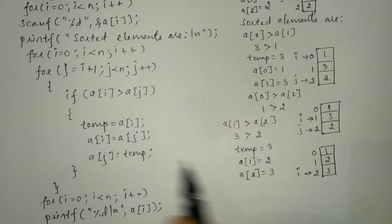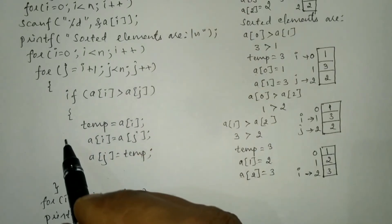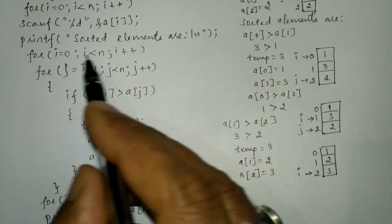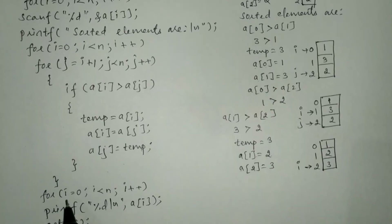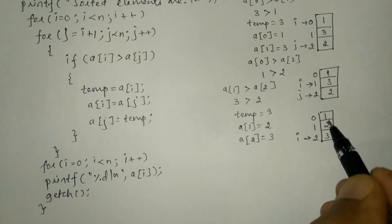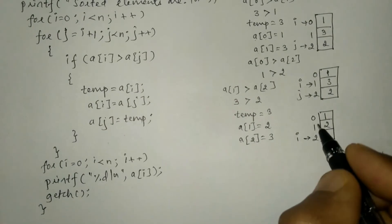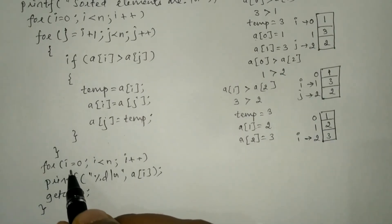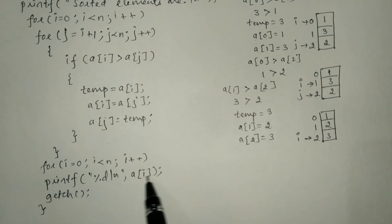i equals one, j increments to three — three is not less than three, so the inner loop exits. The outer loop increments i to two, making j equal three — three is not less than three, inner loop condition fails. i increments to three — outer loop condition fails. Control exits the sorting structure and enters the print loop, printing a[0] equals one, a[1] equals two, a[2] equals three — all elements in ascending order.